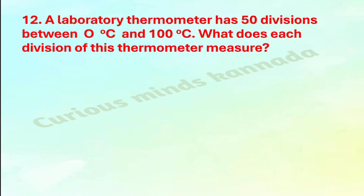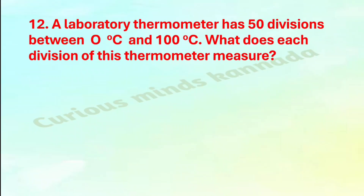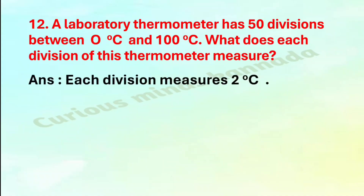Twelfth question: A laboratory thermometer has 50 divisions between 0 degree Celsius and 100 degree Celsius. What does each division of this thermometer measure? Answer: Each division measures 2 degree Celsius.